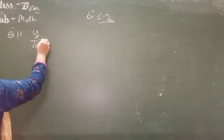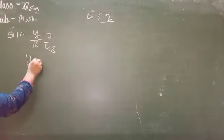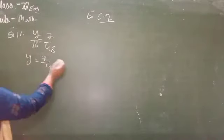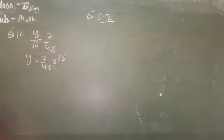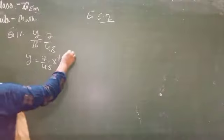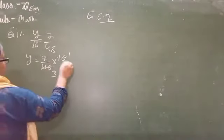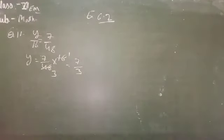Question number 11: y upon 60 equals 7 upon 48. So 7 upon 48 is divided and multiplied by 16. The table is 16, and 16 into 48 is 3. So the answer is 7 upon 3. There you go.